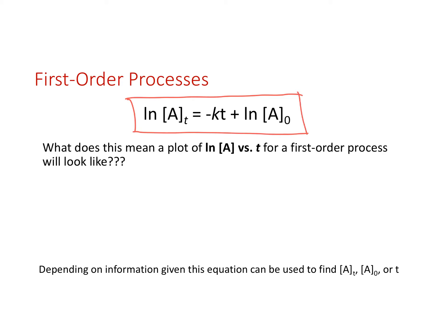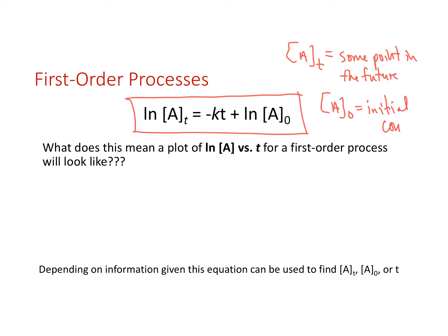Here is the integrated rate law for a first order reaction. The natural log of concentration at time t equals negative kt — where k is our rate constant and t is the time for that reaction — plus the natural log of A-zero. A at time zero is the starting point of the reaction, the initial concentration.